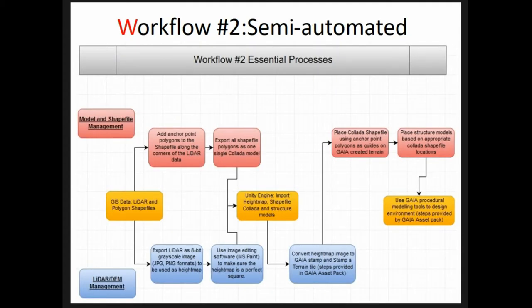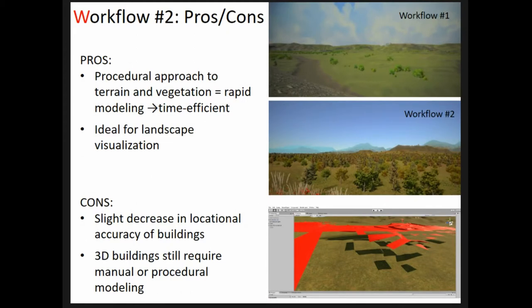After learning from that step, we moved on to the second workflow, which is semi-automated and focuses on the ability to procedurally generate not only buildings but also terrain and vegetation. The emphasis here is on getting more procedural modeling for the environment rather than having to do it by hand.